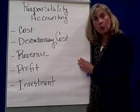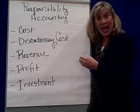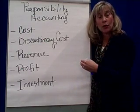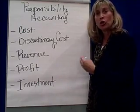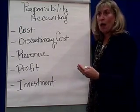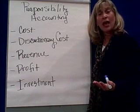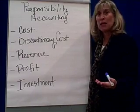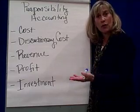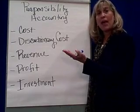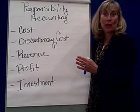A flexible budget is prepared at the end of the year based on the actual output — it shows what the budget looks like based upon what you actually produced. It's much more meaningful to compare actual results with that flexible budget rather than the master budget you prepared before the year ever began.